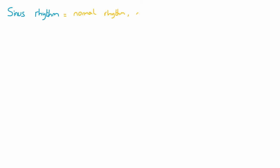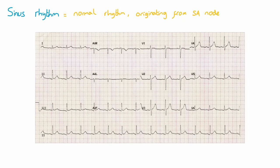The commonest ECG you will come across, particularly in clinical practice, is sinus rhythm, i.e. a normal ECG. This is characterised by a regular rhythm with each wave of depolarisation originating from the sinoatrial node. This is what we see in a healthy individual without pathology. Being able to recognise a normal ECG is essential as it allows you to know when something is abnormal.